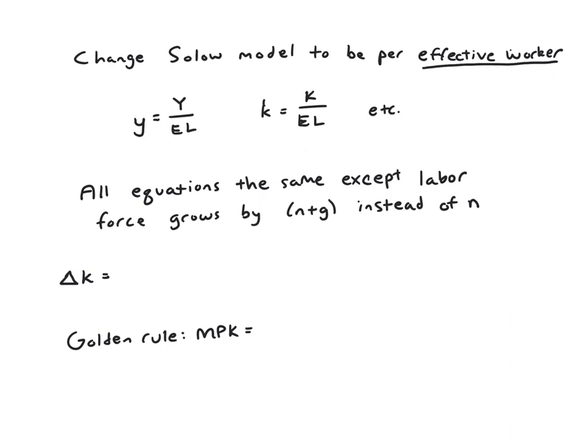And the nice thing is, what you sort of notice about this, is that growth in E is going to be a lot like growth in L. If E gets bigger, all these denominators get bigger. If L gets bigger, all these denominators get bigger. So all the equations are going to be the same, except the labor force now grows, both because L grows, and in effect, it grows because E grows. So anywhere we had in a previous equation an n, we're going to now have an n plus g.